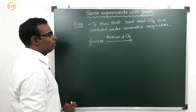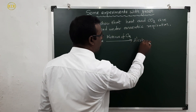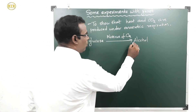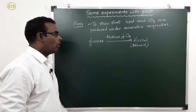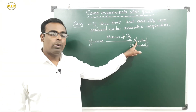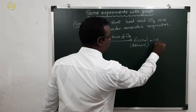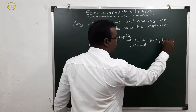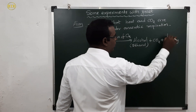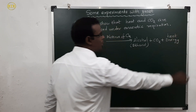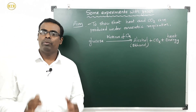The products formed in anaerobic respiration are: alcohol — also called ethanol — carbon dioxide, and energy. Energy is produced in the form of heat. This respiration is called anaerobic respiration because it takes place in the absence of oxygen.